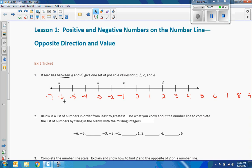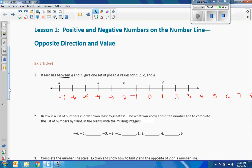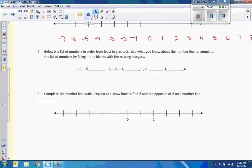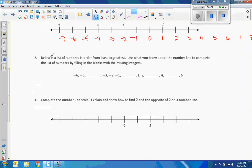If I did it here, a would be negative six, b would be negative three, c would be negative one, d would be two. And finally here, a would be negative seven, b would be negative four, c would be negative two, and d would be one. So answers will vary on that.